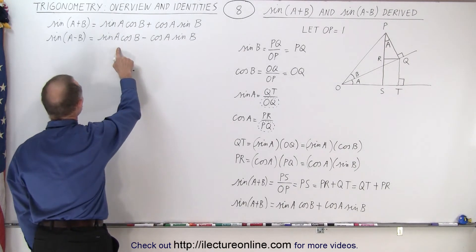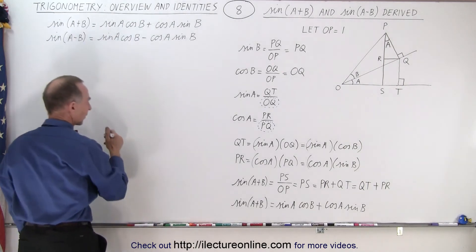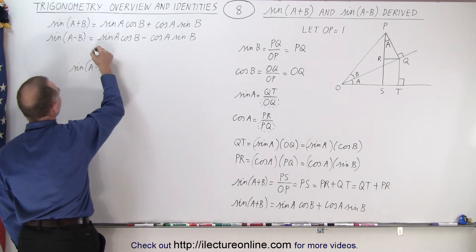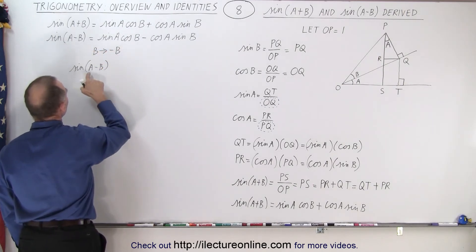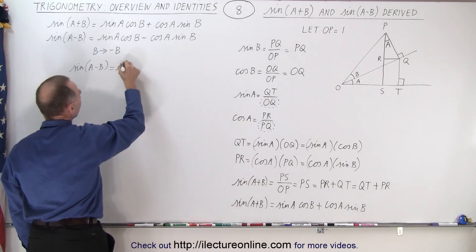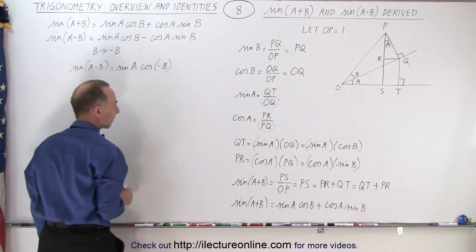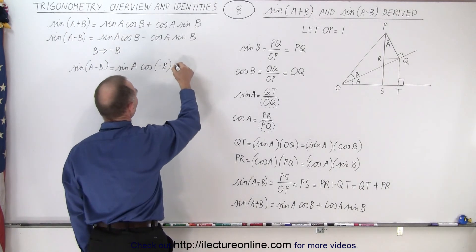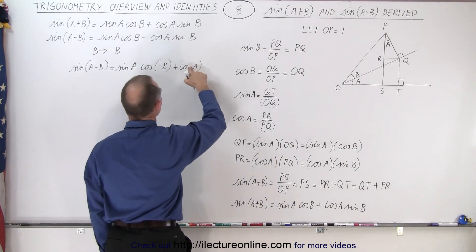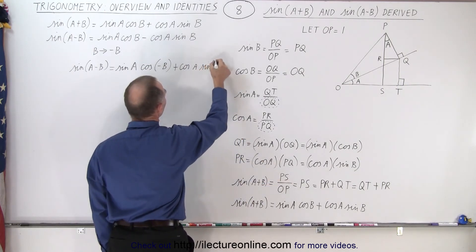Now to get the second identity, we're going to replace plus b by negative b. So we have the sine of a minus b — meaning we take every b and replace it by minus b. That is equal to sine a times the cosine of negative b, plus cosine a times the sine of negative b.